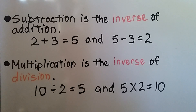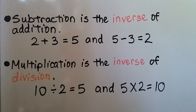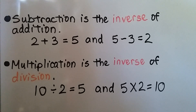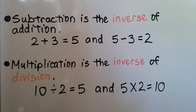Subtraction is the inverse of addition. Just as 2 plus 3 is equal to 5, and 5 minus 3 is equal to 2. Multiplication is the inverse of division: 10 divided by 2 is equal to 5, and 5 times 2 is equal to 10.